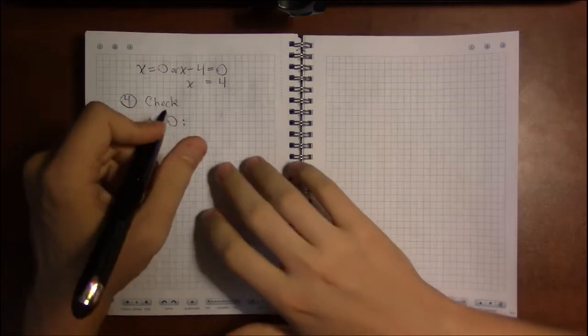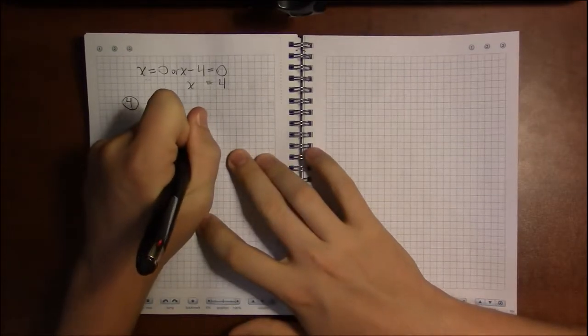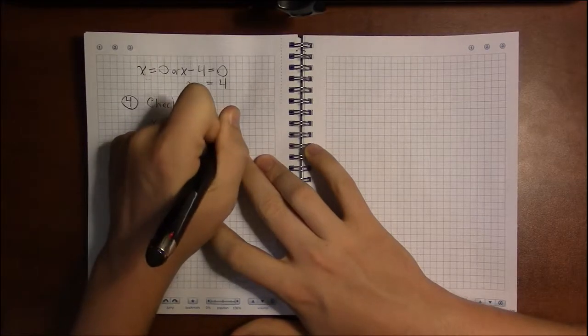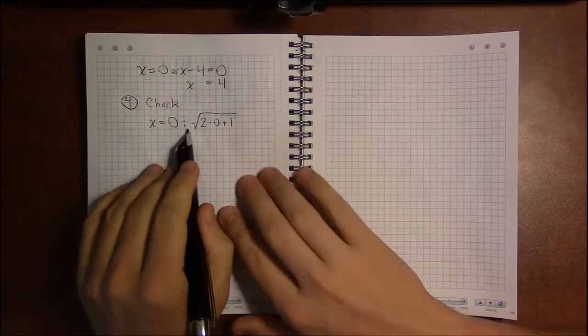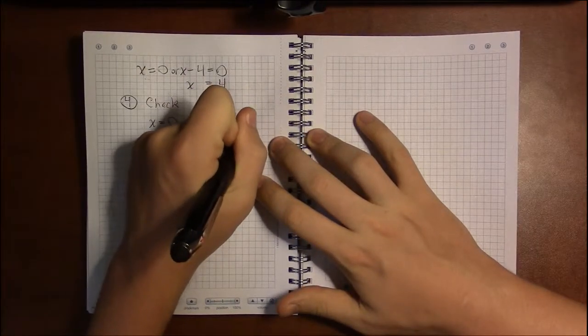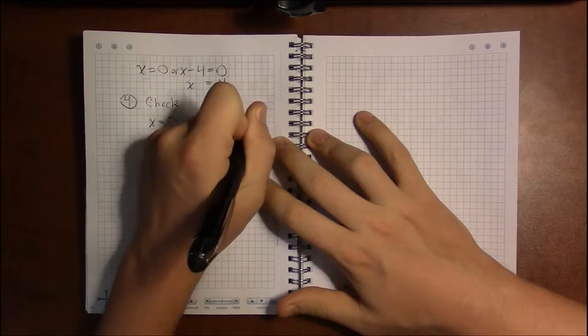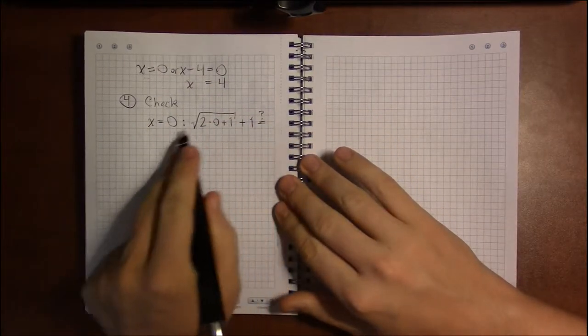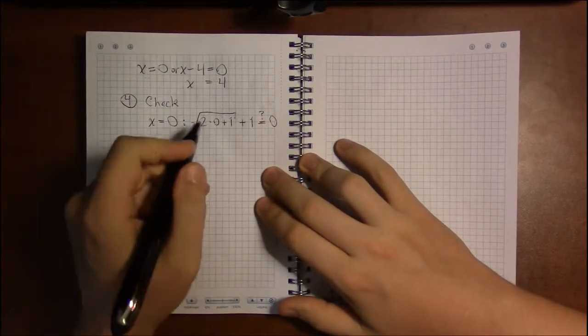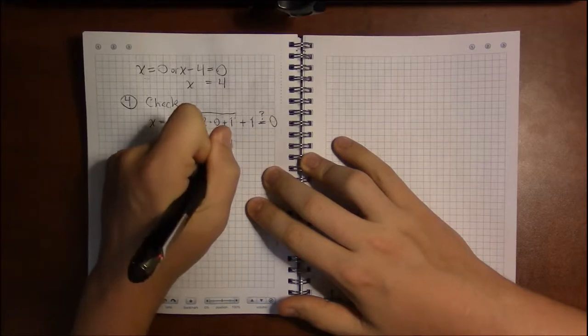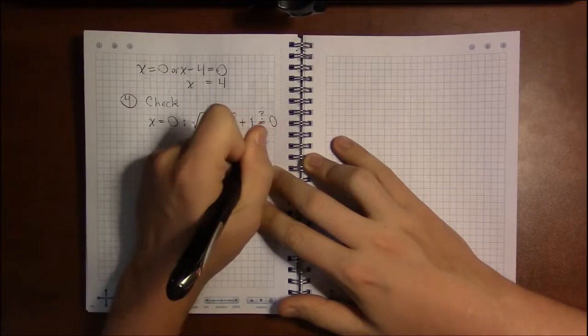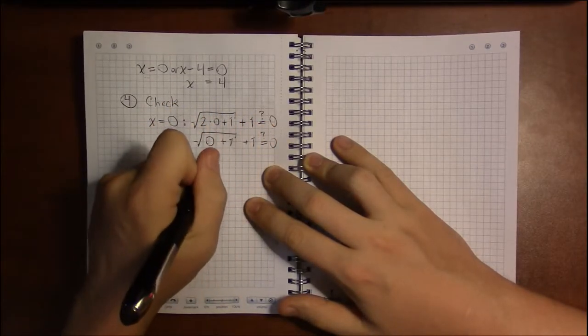So plugging 0 in, the original equation was square root of 2x plus 1. So this is going to be square root of 2 times 0 plus 1. Then we add 1, and we're expecting this to be, or hoping this to be, equal to x, or in this case, 0. Well, 2 times 0 is just 0. Then we add 1, take the square root, and add a second 1. So 0 plus 1 is 1.